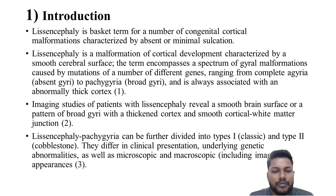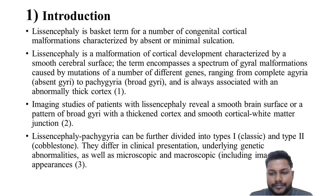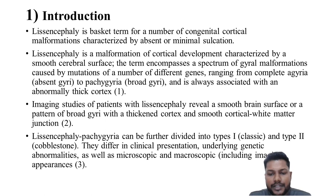Imaging studies of a patient with Lissencephaly reveal a smooth brain surface or a pattern of broad gyria with a thickened cortex and a smooth cortical white matter junction. Lissencephaly-pachygyria can be further divided into type 1 classic and type 2 cobblestone. They differ in clinical presentation, underlying genetic abnormalities, as well as macroscopic and microscopic including imaging appearances.